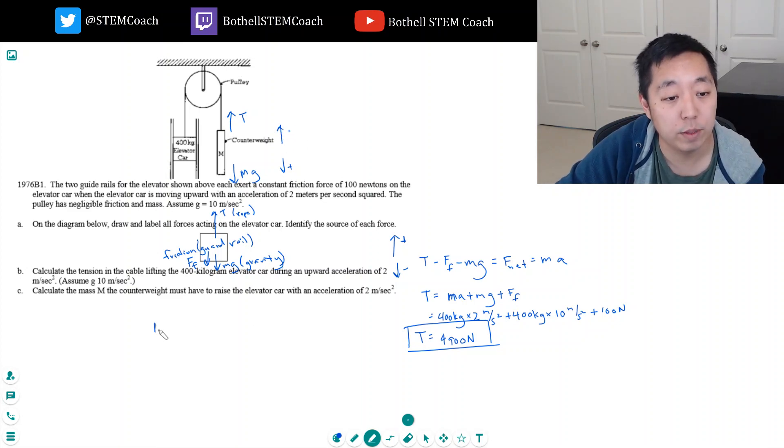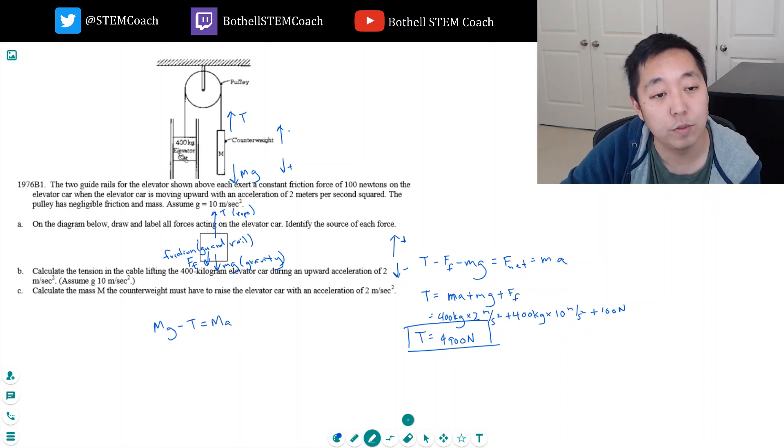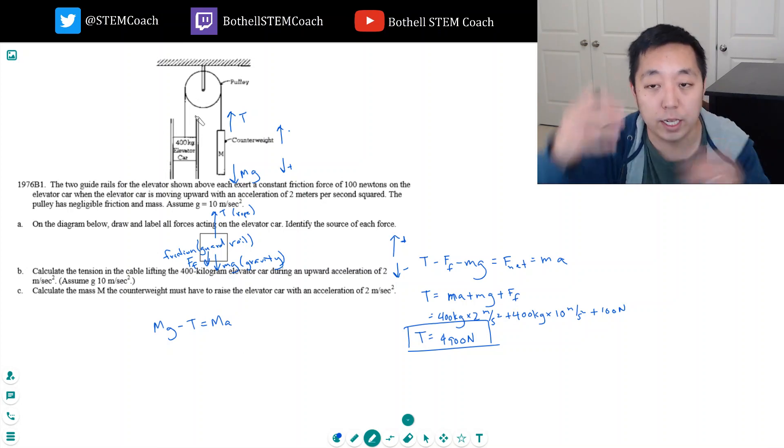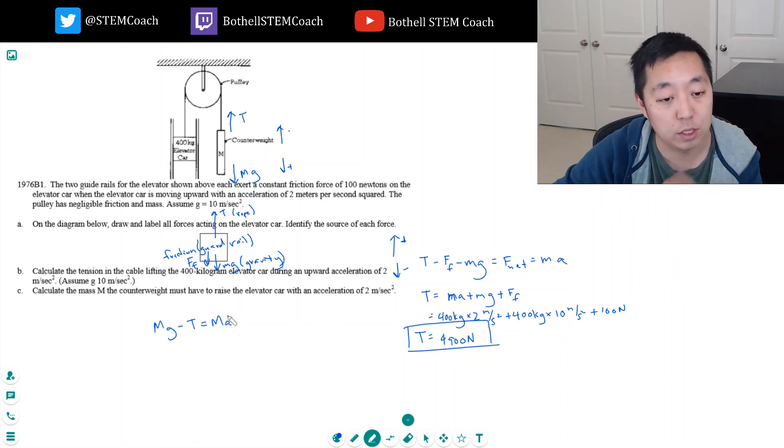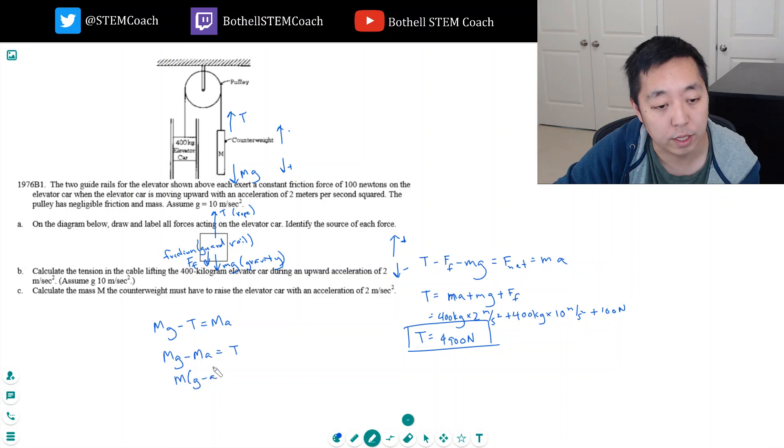Okay, so then I have mg minus T is equal to m times the acceleration. Now this counterweight has to move at the same acceleration with this elevator car because they got to move in tandem, they got to move together. So this is 2 meters per second squared, so I just need to solve for m. So I'm going to combine - bring over here: mg minus ma equals T, or m times (g minus a), factor out the m, and m is equal to T over (g minus a). Now T was 4900, g is 10 meters per second squared, a is 2 meters per second squared, so this is 4900 newtons divided by 8 meters per second squared, and that is 612.5 kilograms.